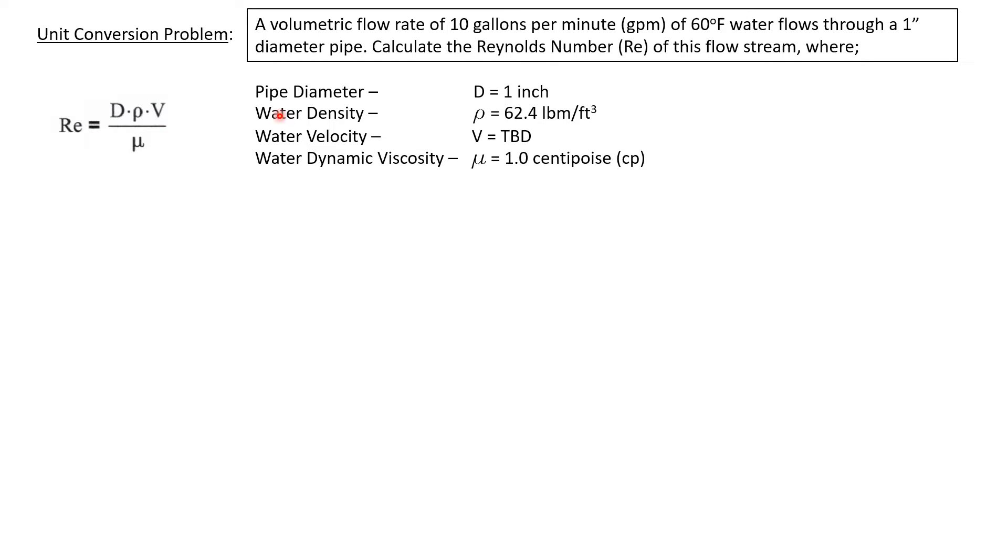Now we will recognize that a Reynolds number is a dimensionless number. And look at the units that we've got. Here we've got inches, here we've got units of feet, and here we have units of centipoise. If we just plug these values in, once we compute the value of velocity, we're not going to get a dimensionless number. So how are we going to fix that?